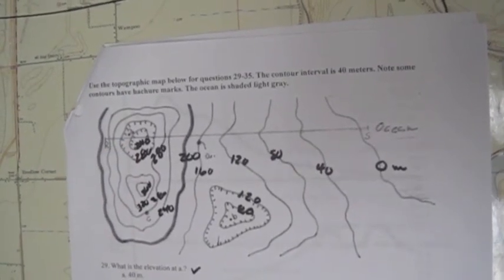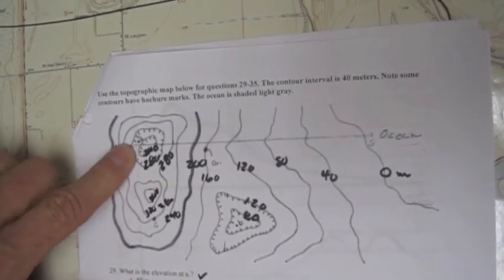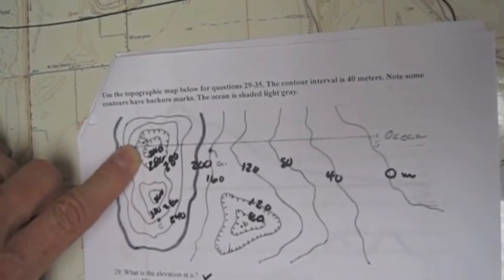Question 34 says, can a person in D see a person in A? Well, remember D is still right here between 240 and 280.